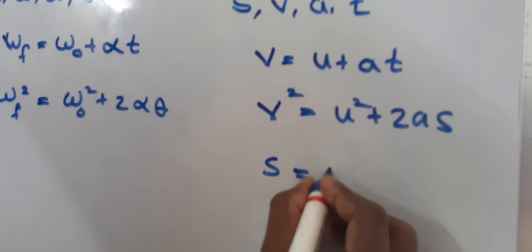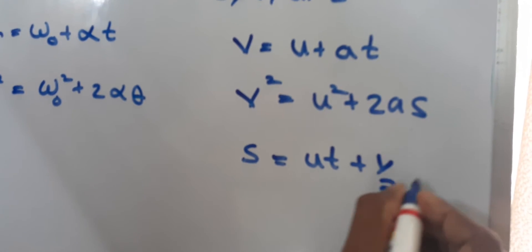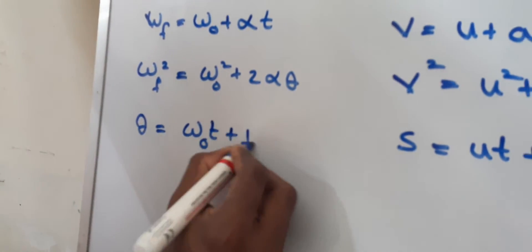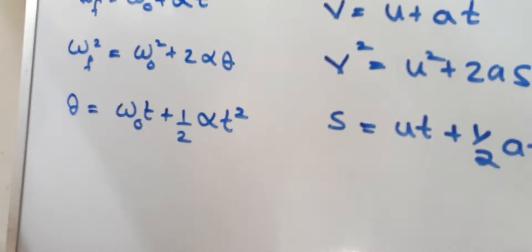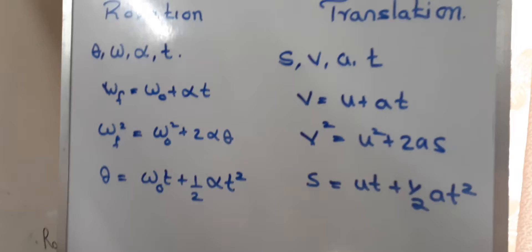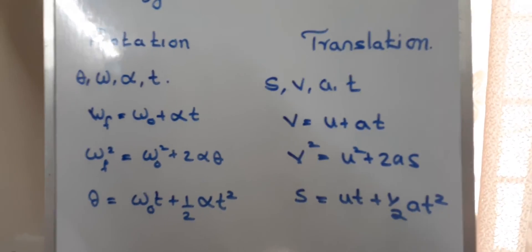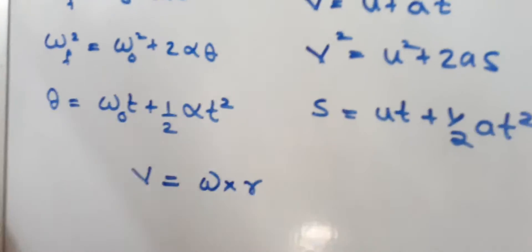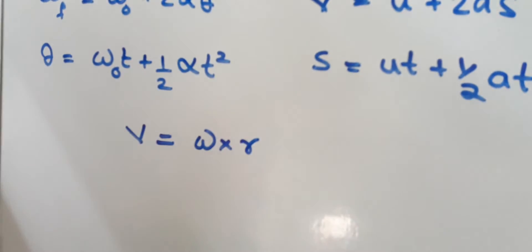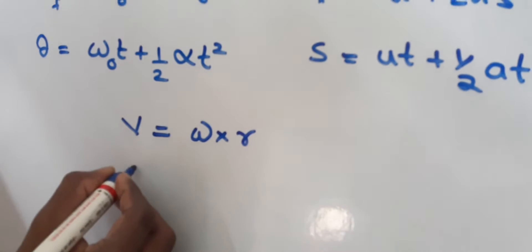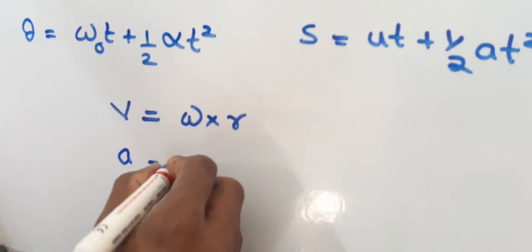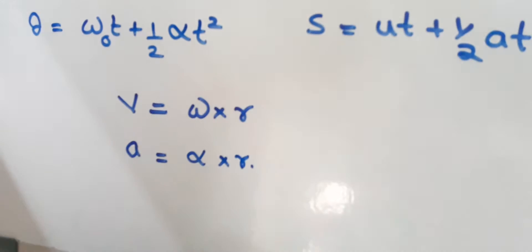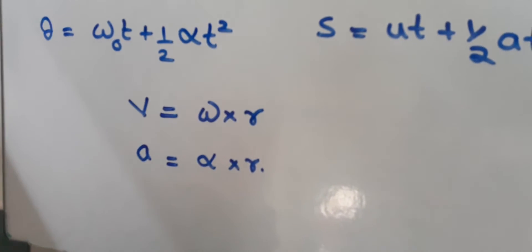There is one more relation: s equals u*t plus half a*t-squared, and in rotation it becomes theta equals omega_naught*t plus half alpha*t-squared. So there is a strong analogy between translation and rotation. We also know that linear velocity equals omega times radius, and linear acceleration equals alpha times radius.